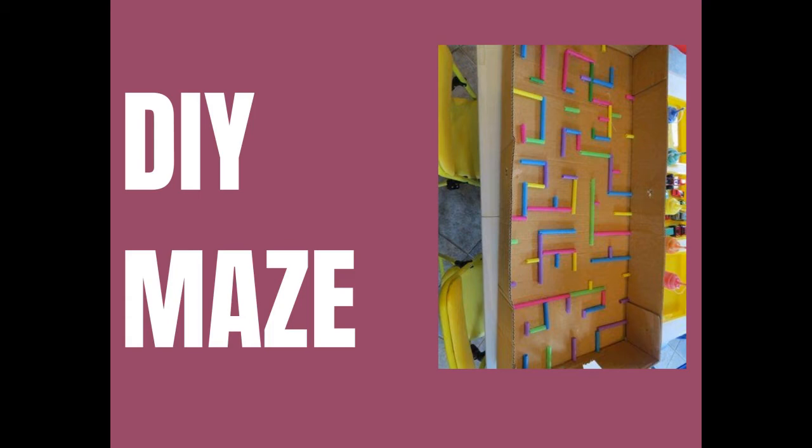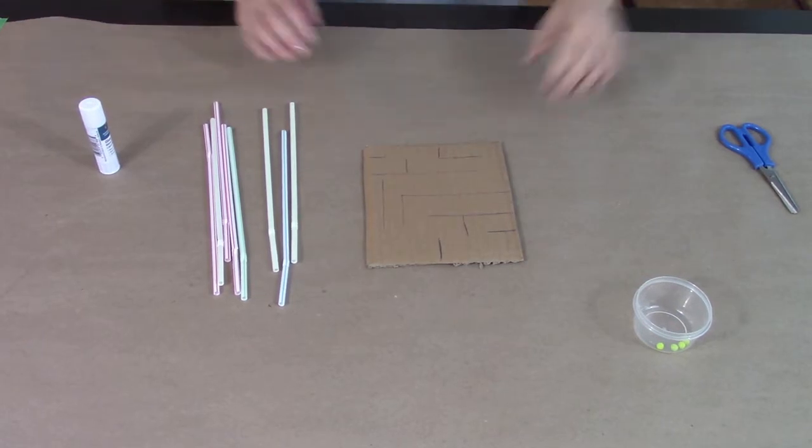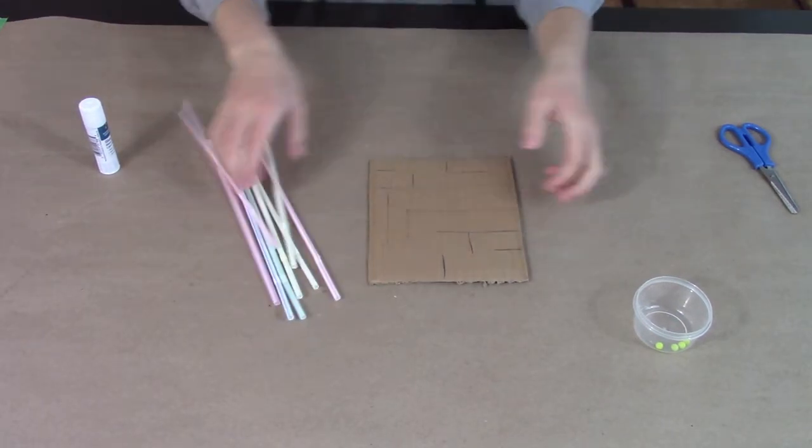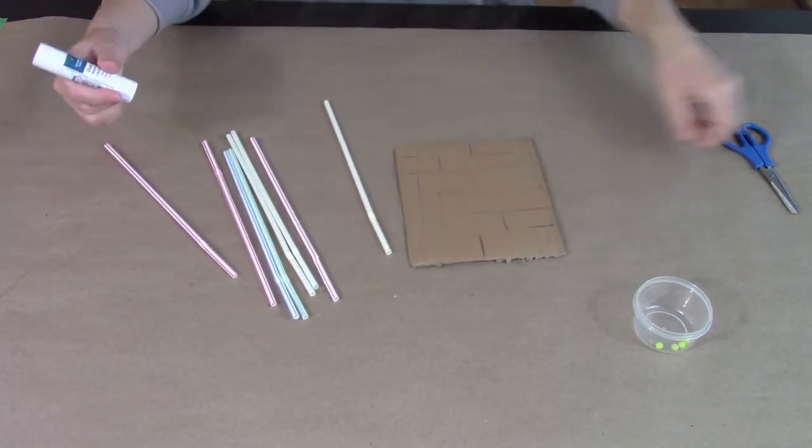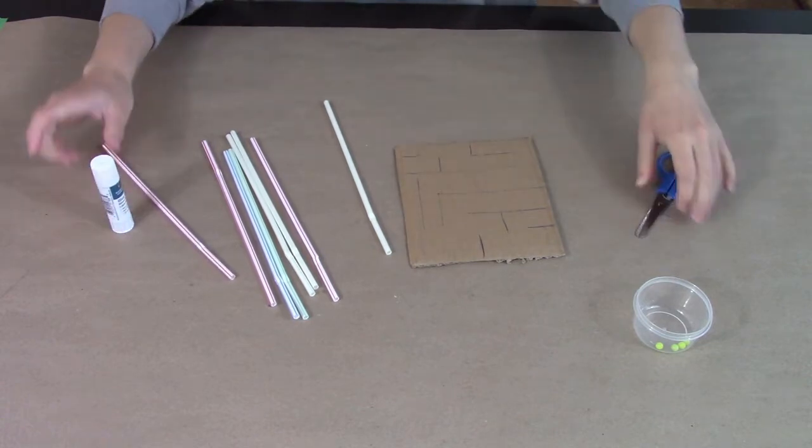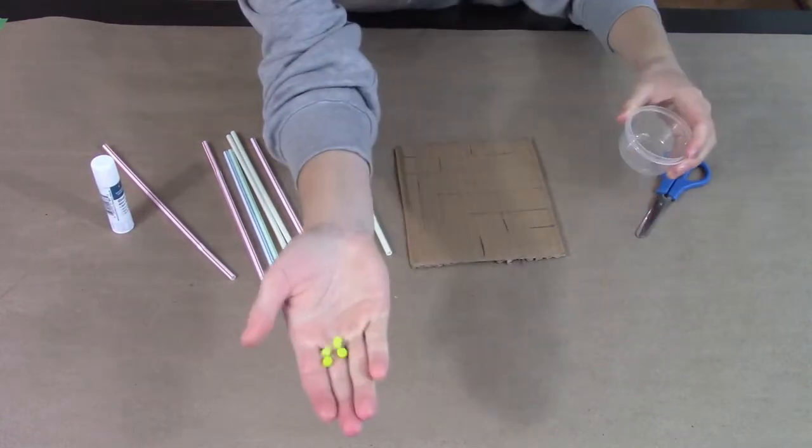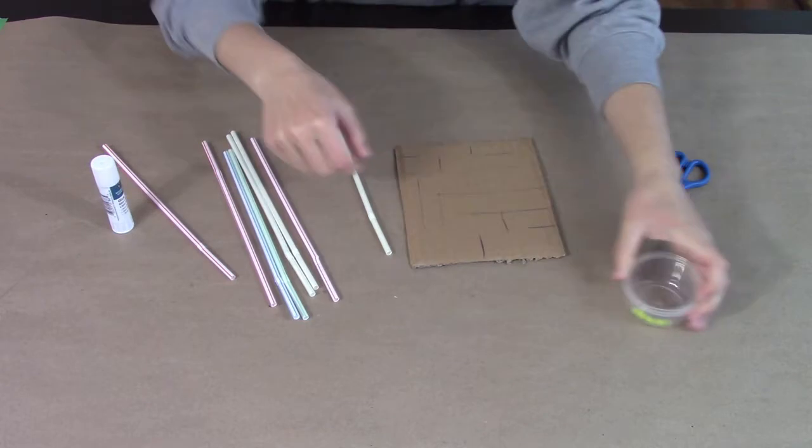Hey guys, today we will be showing you how to make a mini marble maze. To create this maze, you're going to need some straws, a piece of cardboard, glue, scissors, and some kind of small ball. We found some BB pellets at the dollar store, but you could use any kind of round small ball.